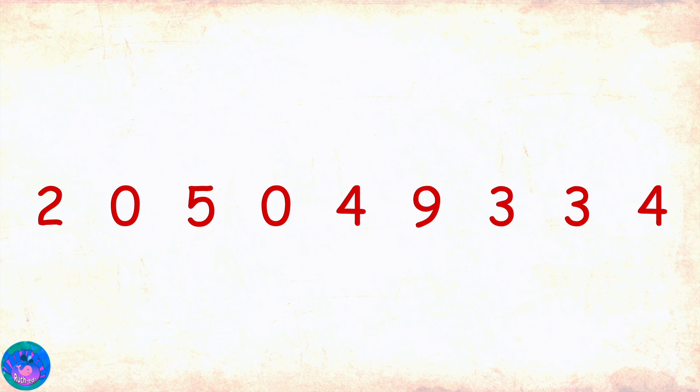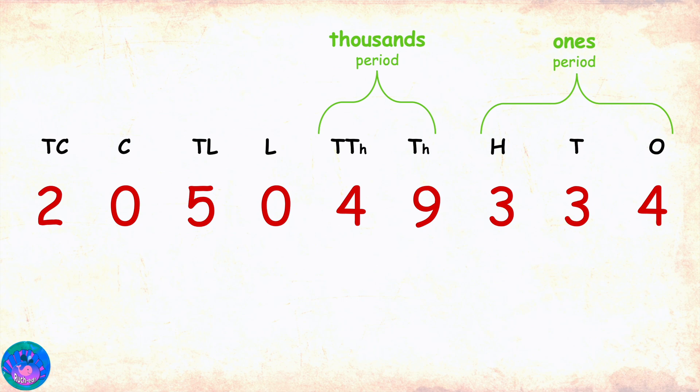Nine digits. The number places would be ones, tens, hundreds, thousands, ten thousands, lakh, ten lakh, crore, and ten crore. And our periods would be the ones period comprising of ones, tens, and hundreds, the thousands period comprising of thousands and ten thousands, the lakhs period comprising of lakh and ten lakhs, and the crores period comprising of the crore and ten crore places.